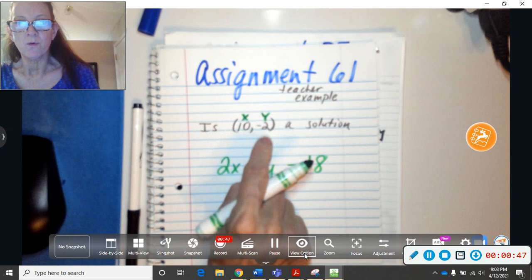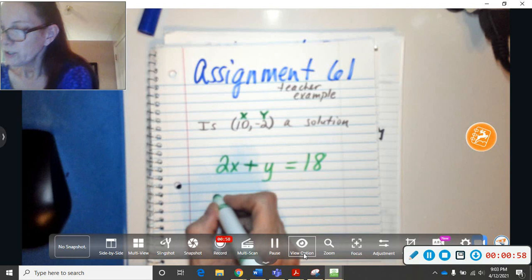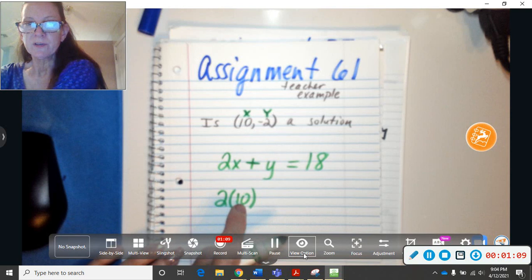So I'm going to plug those two values into the equation. So let's do it. 2, and instead of x, I'm going to put 10. I put the parentheses around it so you wouldn't think it was 210. It's 2 squished together with 10, which means times.